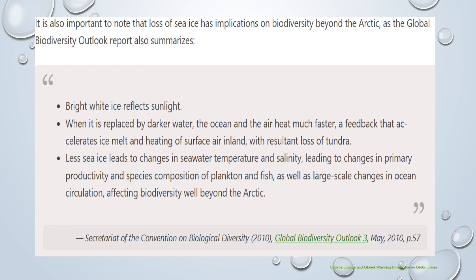Bright white ice reflects sunlight. When it is replaced by darker water, the ocean and the air heat much faster — a feedback that accelerates ice melt and heating of surface air inland, with resultant loss of tundra. Loss of sea ice leads to changes in seawater temperature and salinity, leading to changes in the primary productivity and species composition of plankton and fish, as well as large-scale changes in ocean circulation affecting biodiversity well beyond the Arctic.